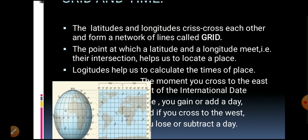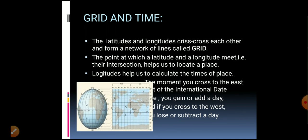When you cross to the east of the International Date Line, you gain or add a day. When you move west of the International Date Line, you subtract a day. For example, if today is the 24th, moving east makes it the 25th, and moving west makes it the 23rd. I hope everything is clear — if you have any questions, please let me know in the comments. Thank you and have a nice day.